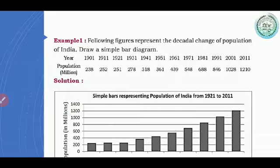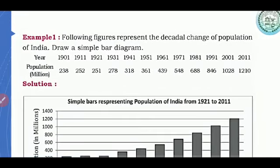Now, we will see some examples how a simple bar diagram is drawn. With the first example, following figures represents the decadal change of population of India. Draw a simple bar diagram. Decadal means, in our country, we are taking the census after every 10 years. So, here, we have taken the census population for over a period of time. And this data, we are going to represent it in the form of simple bar diagram. So, the year is starting from 1901, 1911, 1921, 31, 41. So, on till 2011, the whole population and it is represented in millions.